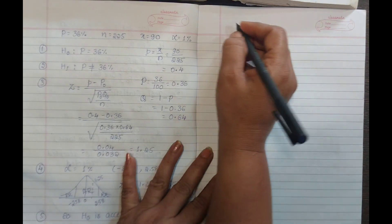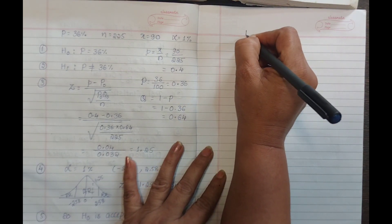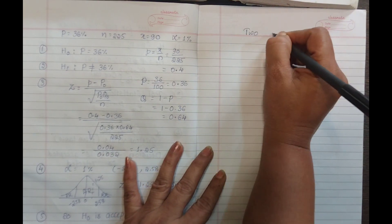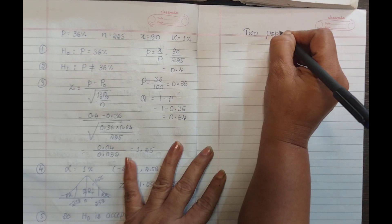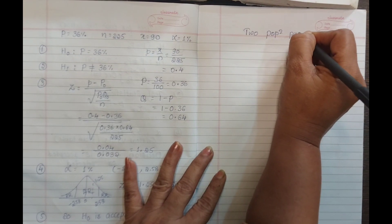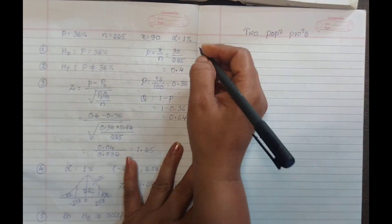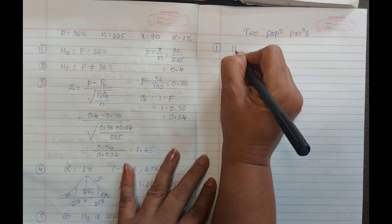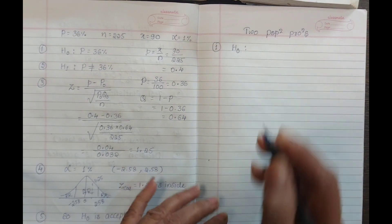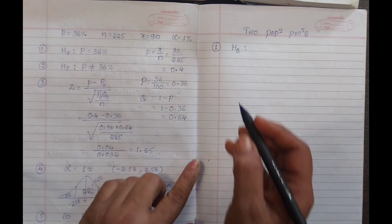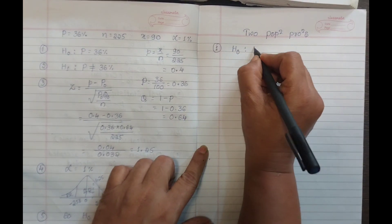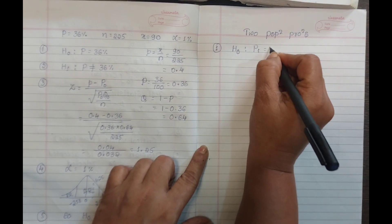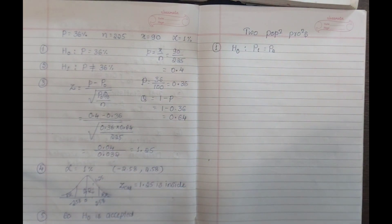For each question, the first step is setting up H0 and H1 — the two population proportions. H0 is the null hypothesis. The null hypothesis states that the two population proportions are equal: P1 equals P2. Always, the null hypothesis should be equal.